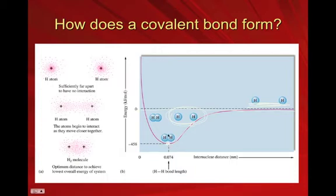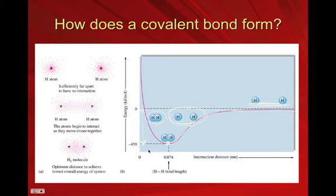They get closer and closer until you reach a magic distance where they've lost the most amount of energy they can. They're at their most stable point, and cramming them any closer would take a lot of energy. The y-axis is energy. The difference between the standard energy state and the minimum energy is the bond energy, and the distance at the bottom of that curve is the bond length — the magic distance where they're most stable sharing electrons.